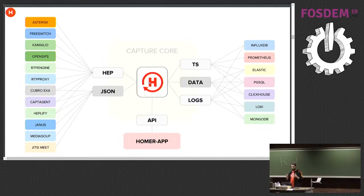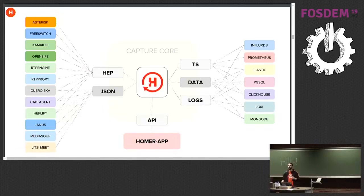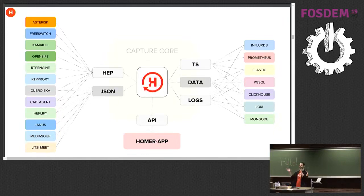Once data makes it into Homer, it gets processed, indexed, and prepared for correlation. Then it splits into three main groups: TS for time series, Data for whatever we index and make searchable, and Logs. Based on complexity, there are different use cases and different types of data to handle — and now they're all separate, three nice pipelines. With the same event, we can pick two properties and store them in the database for search, and take three metrics to send to Prometheus, InfluxDB, or whatever we want. You can mix all of the above.